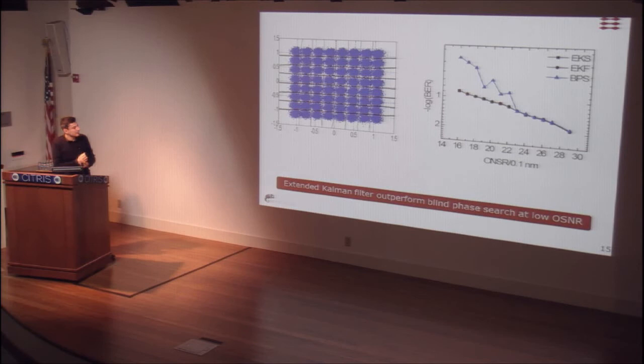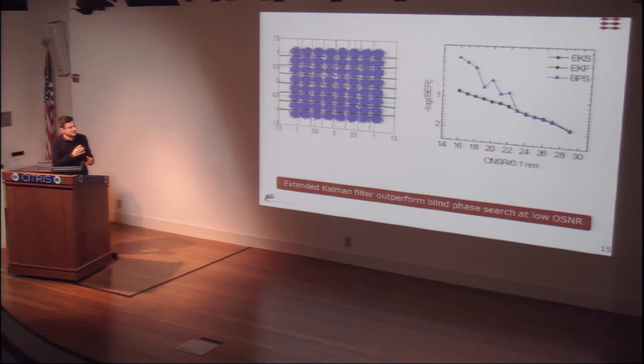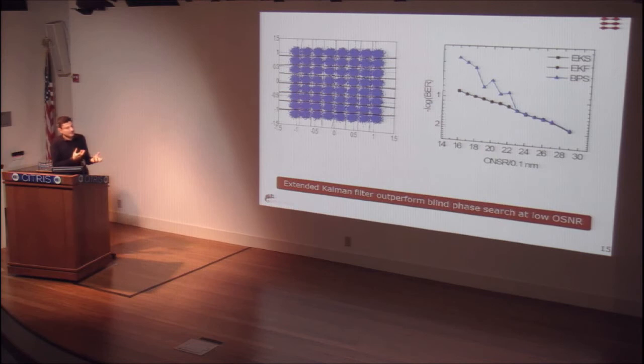We plot the bit error rate as a function of OSNR in 0.1 nanometer bandwidth and benchmark against the commonly used blind phase search method, which tries different test phases to find the best one. We also plotted the optimum decision boundary in the maximum likelihood sense to verify the system is dominated by AWGN. We see that for low optical signal-to-noise ratio, the extended Kalman filter approach outperforms blind phase search. With limited bandwidth and resolution, the signal was distorted, and this more optimal method outperforms the brute force approach for carrier phase estimation.